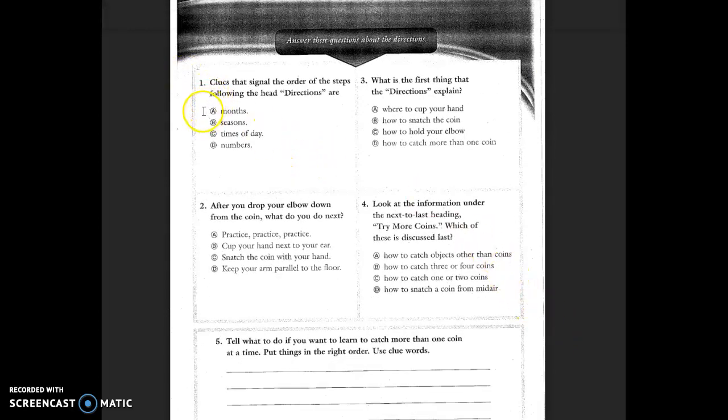Let's answer these four questions. Remember when we're done answering the questions here, you can pause it, write it down, and then we're going to fill it out in our Google form. Number one, clues that signal the order of steps following the heading directions are months, seasons, times of days, or numbers. Go back in the story, look under directions, and see which signal order the steps.